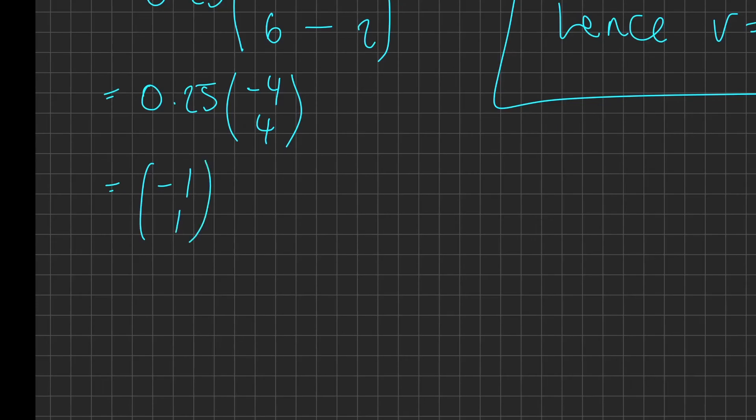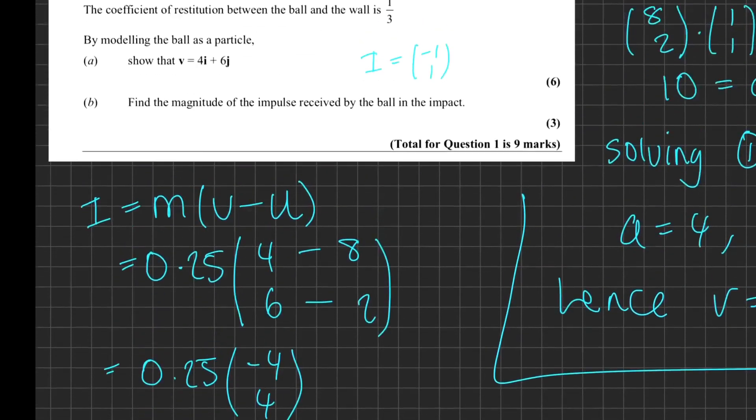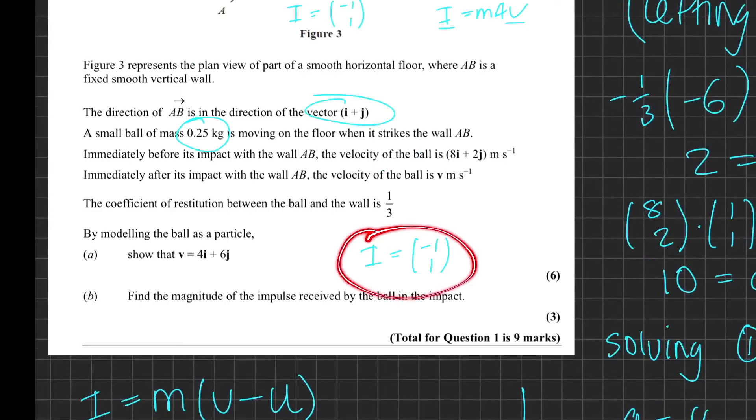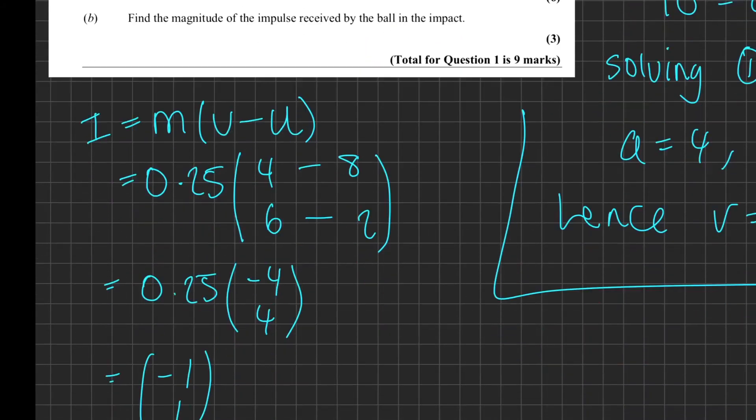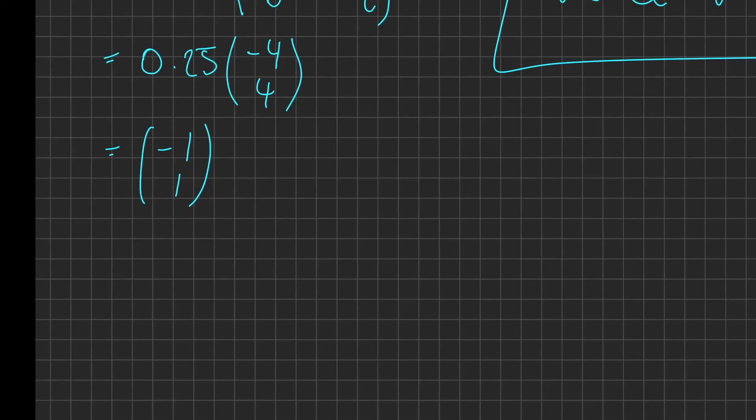So in fact, in this specific case, our i vector - this impulse vector that happened to be parallel to our impulse - actually happens to be our impulse: (-1,1). This is never normally the case. This is just an occurrence that just happened to happen in this question.